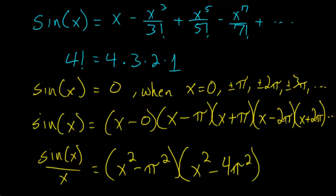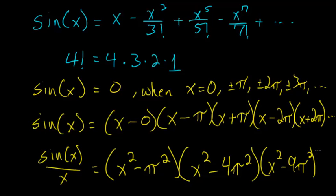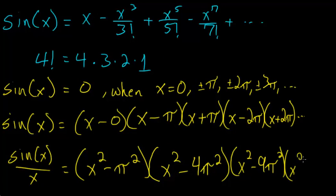Applying this to each pair: the middle terms cancel, leaving the first terms multiplied together (x²) and the last terms multiplied together. So we get x² − π², x² − 4π², x² − 9π², x² − 16π², and so on — this product continues forever.